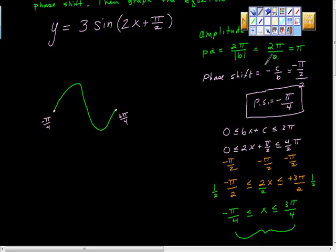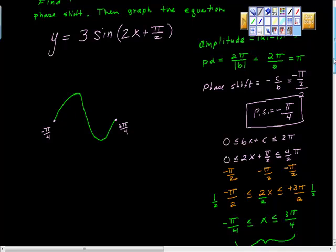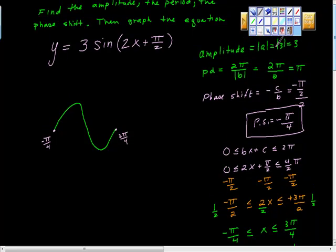We know that the amplitude is 3. So what's this height right here? What's this height here, Mitchell? 3. And this minimum height over here, Mitchell, is negative 3, isn't it?